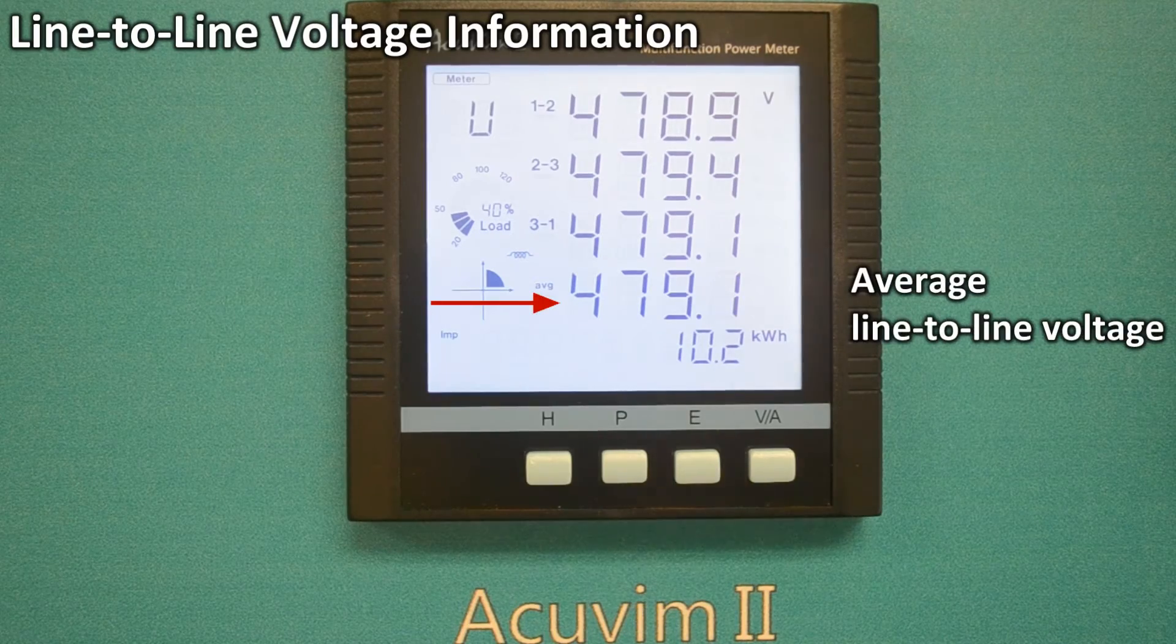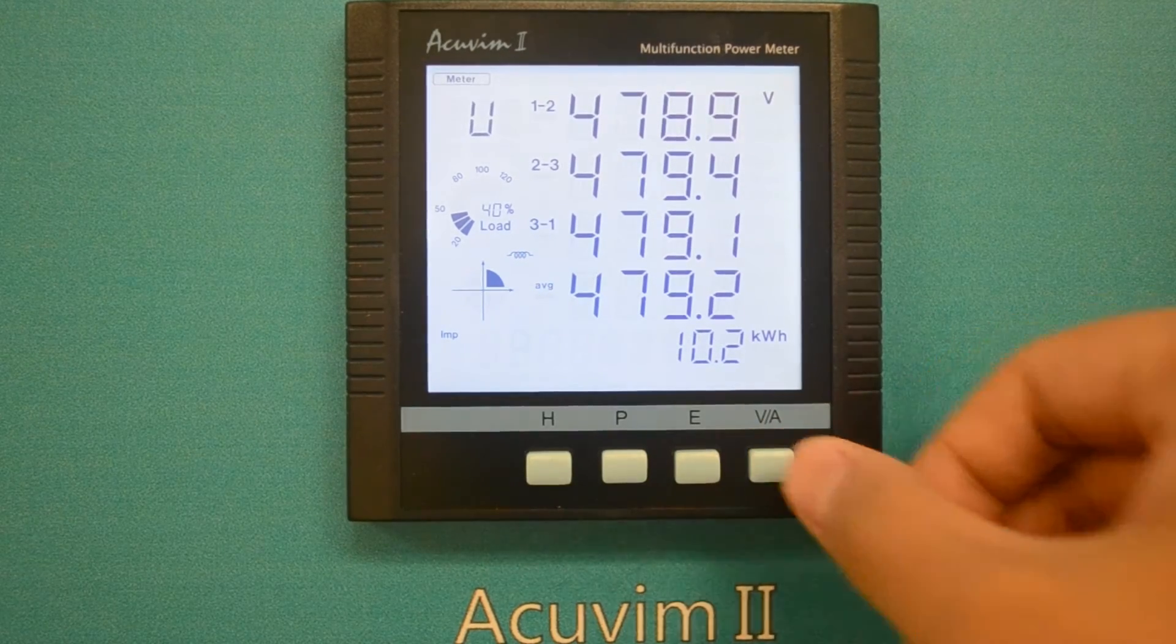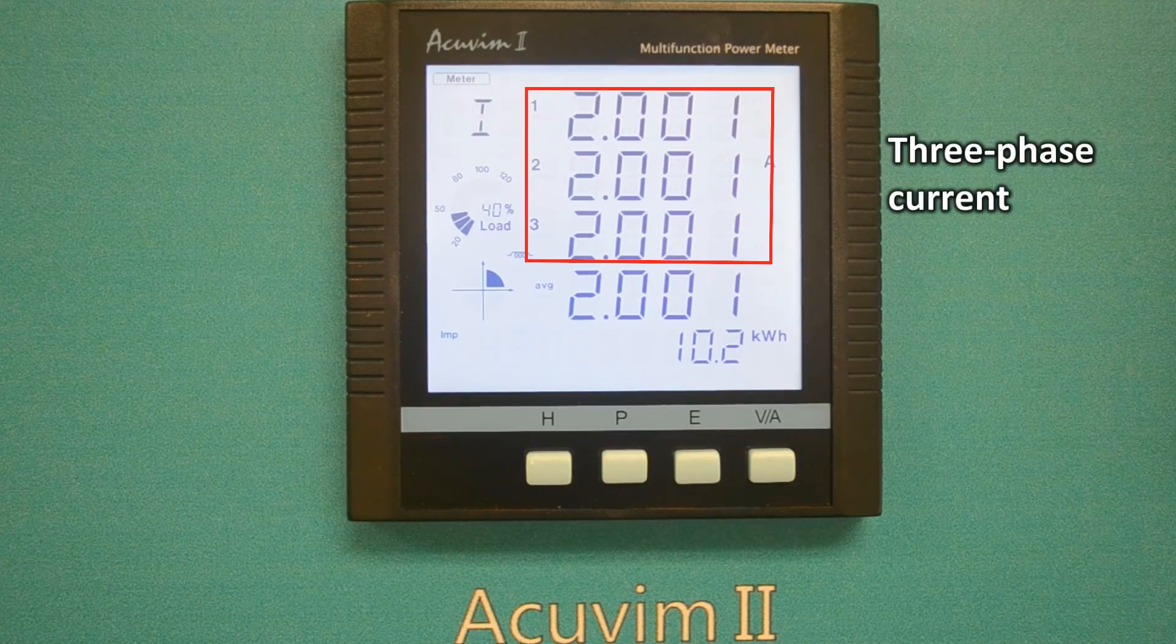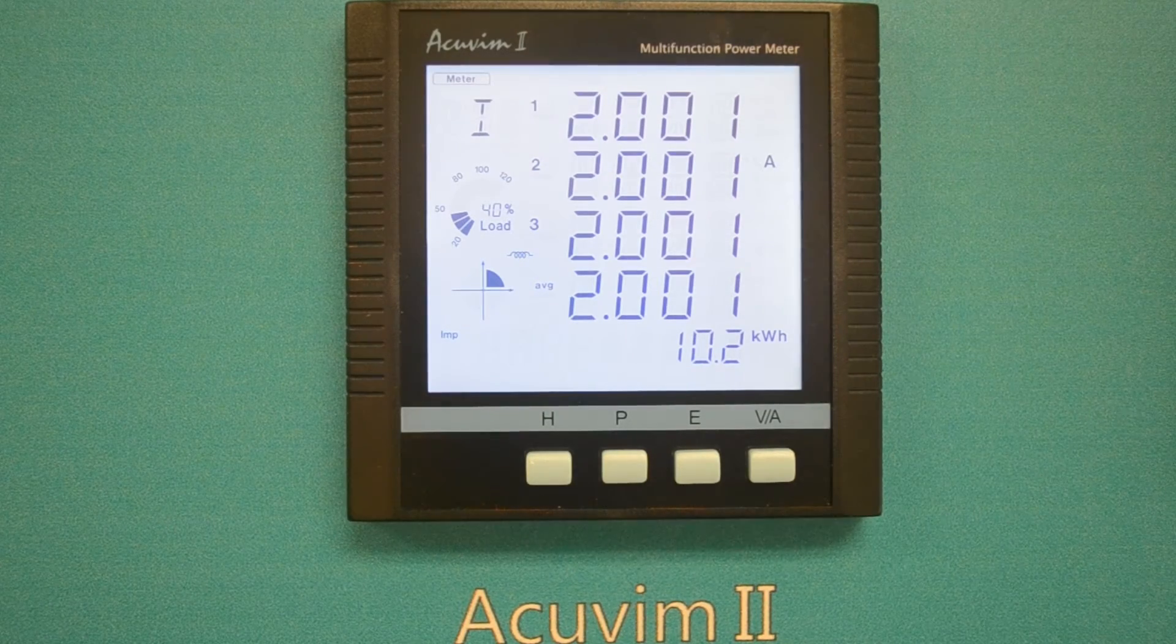The average of line-to-line voltage is also displayed. Moving along, you can also see 3-phase current and average current.